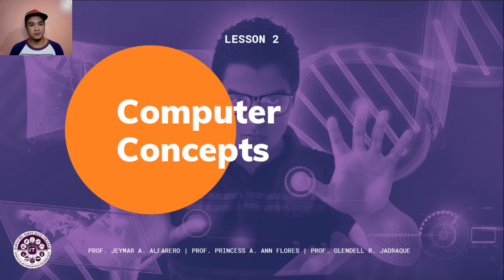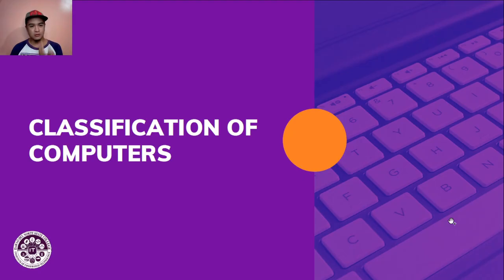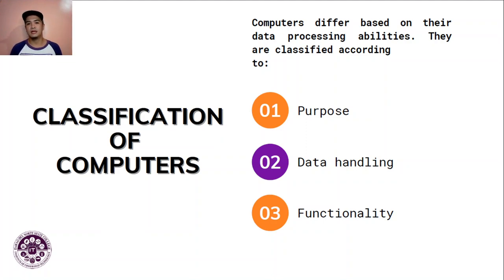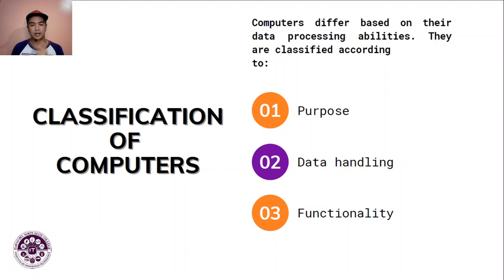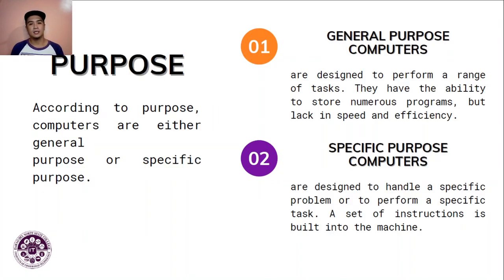Hey guys, welcome to video number two. Today we're going to talk about lesson number two: computer concepts. Let's start with the classification of computers. Computers differ based on their data processing abilities and are classified according to three criteria: purpose, data handling, and functionality.